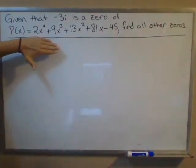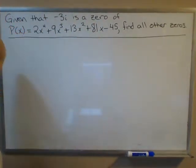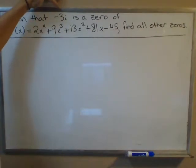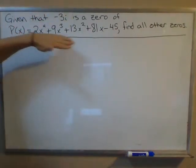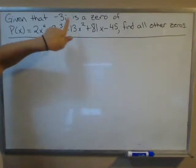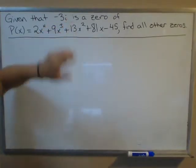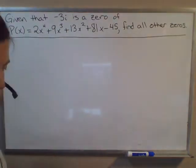Notice that the coefficients in P(x) are all real numbers, so there's a conjugate zeros theorem that says if you're looking at a polynomial with all real coefficients and you have an imaginary zero, then those imaginary zeros have to come in conjugate pairs.